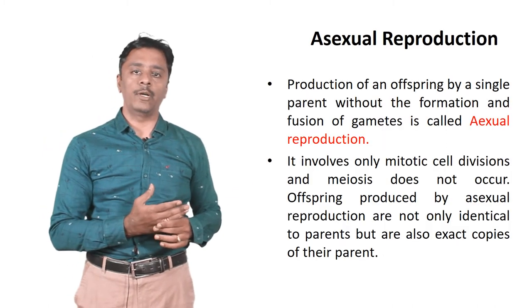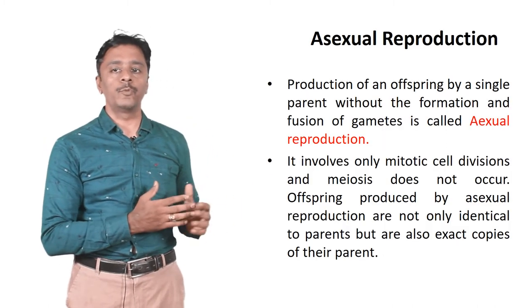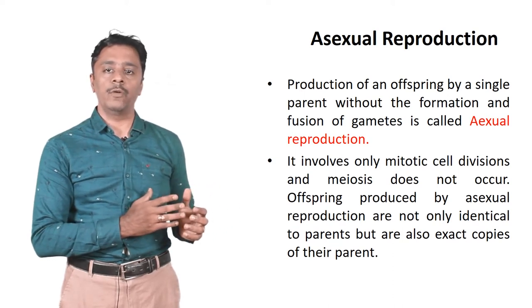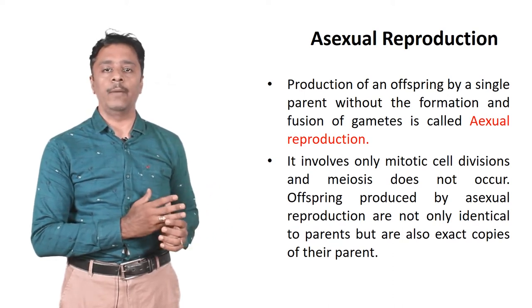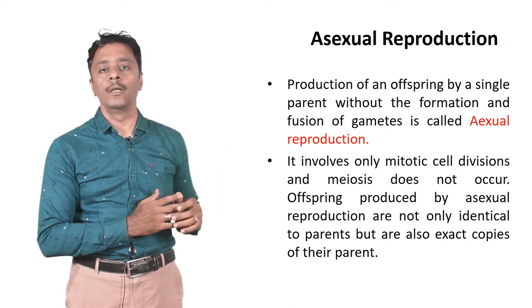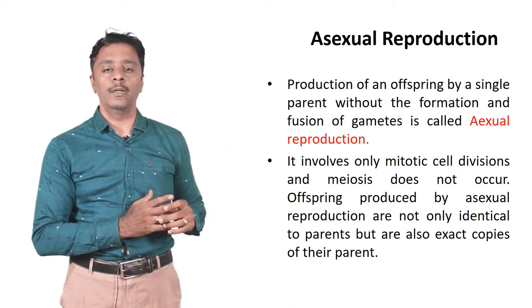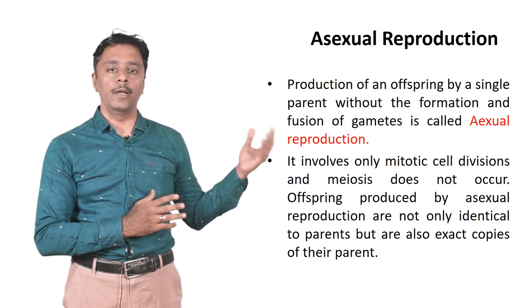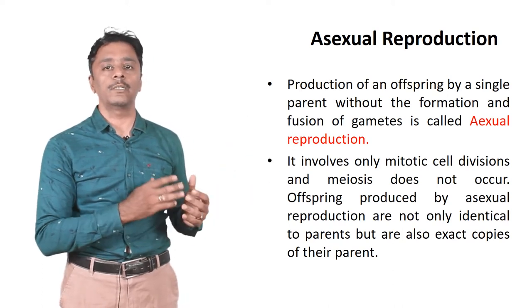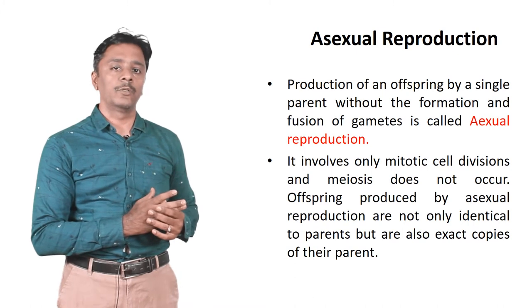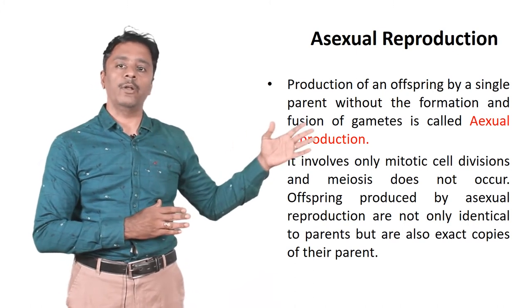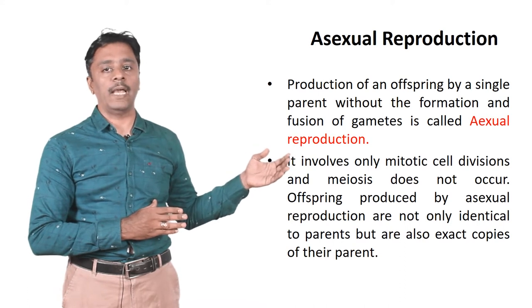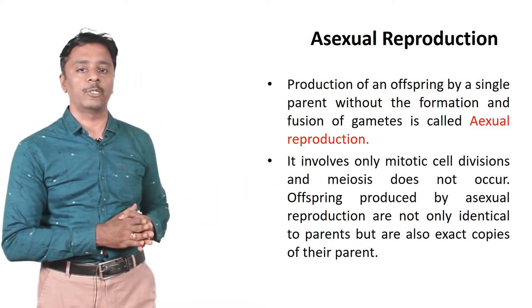Next, we are going to see asexual reproduction. Production of offspring by a single parent without the formation and fusion of gametes is called asexual reproduction. This is a two-mark question that will regularly come in the public exam. The answer: production of offspring by a single parent without the formation and fusion of gametes is called asexual reproduction.